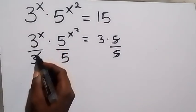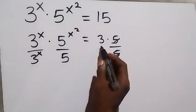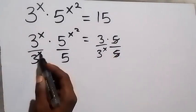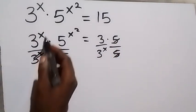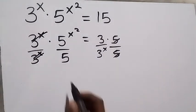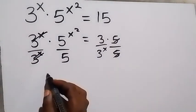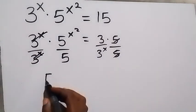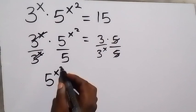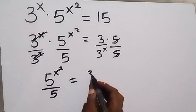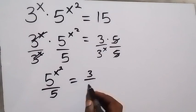We can also remove 3 raised to the power x by dividing both sides by 3 raised to the power x. The 3^x terms cancel each other, and what we have left is 5 raised to the power x squared over 5, which is equal to 3 over 3 raised to the power x.